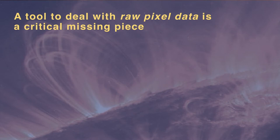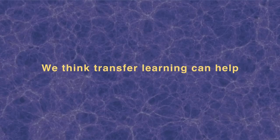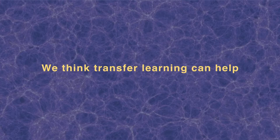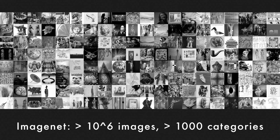They have great data, but one thing they're actually missing are tools to take advantage of the images they get. Right now they get data back about the light, the energy, and all the stuff coming back, as well as the images, but they don't use the actual pixel-level data. Some astronomers we're working with have decided to use transfer learning — basically computer vision technology — to try to solve this problem.